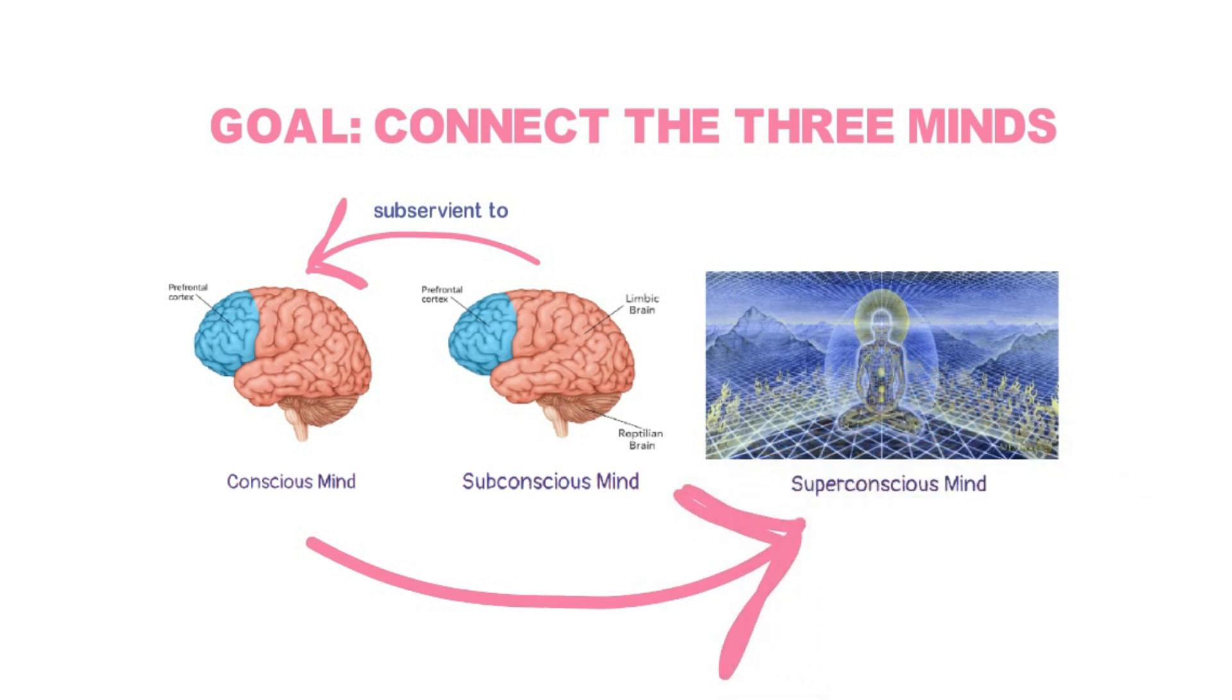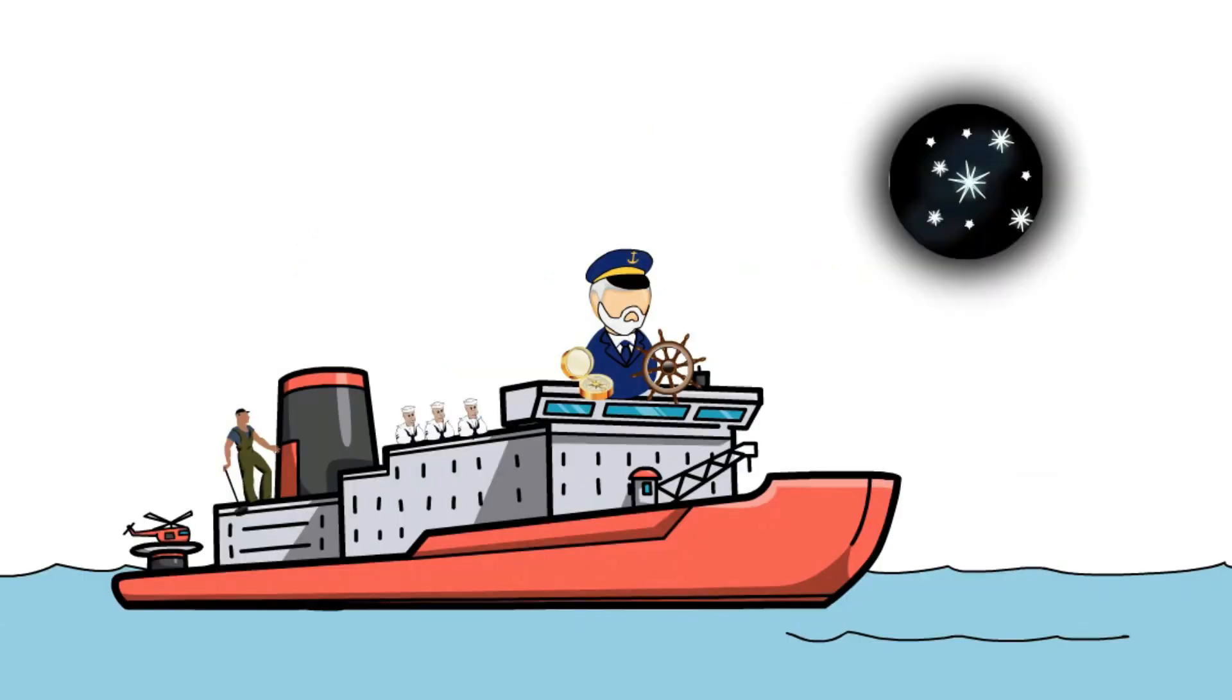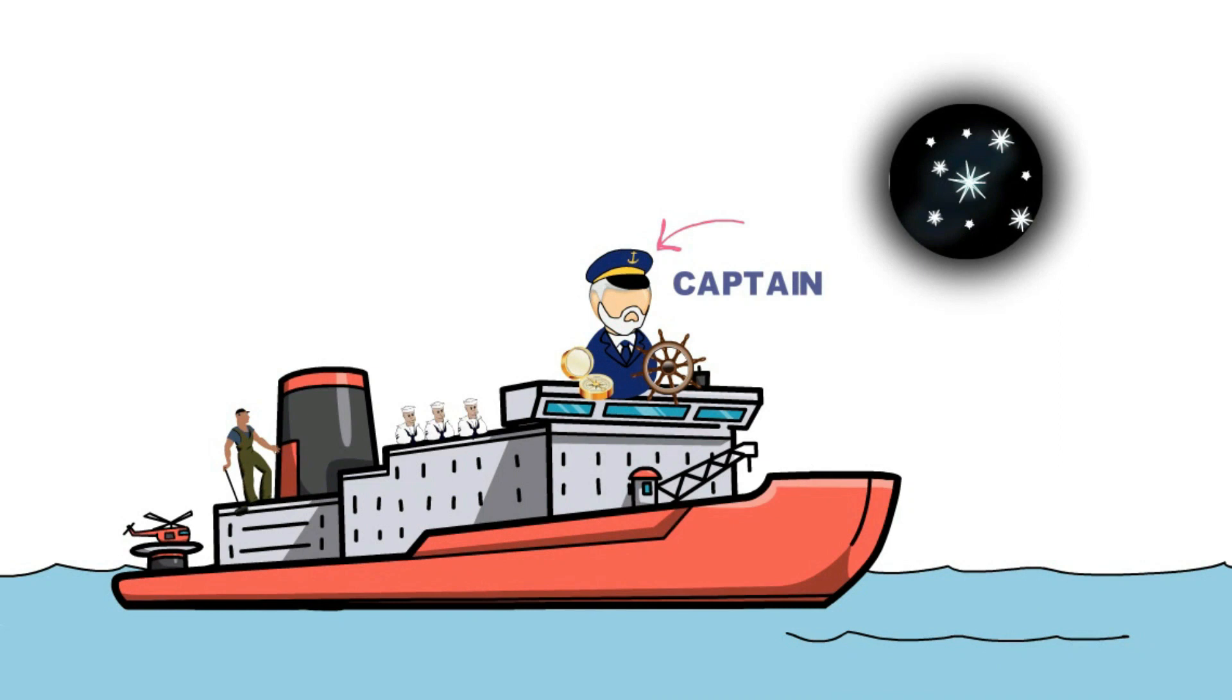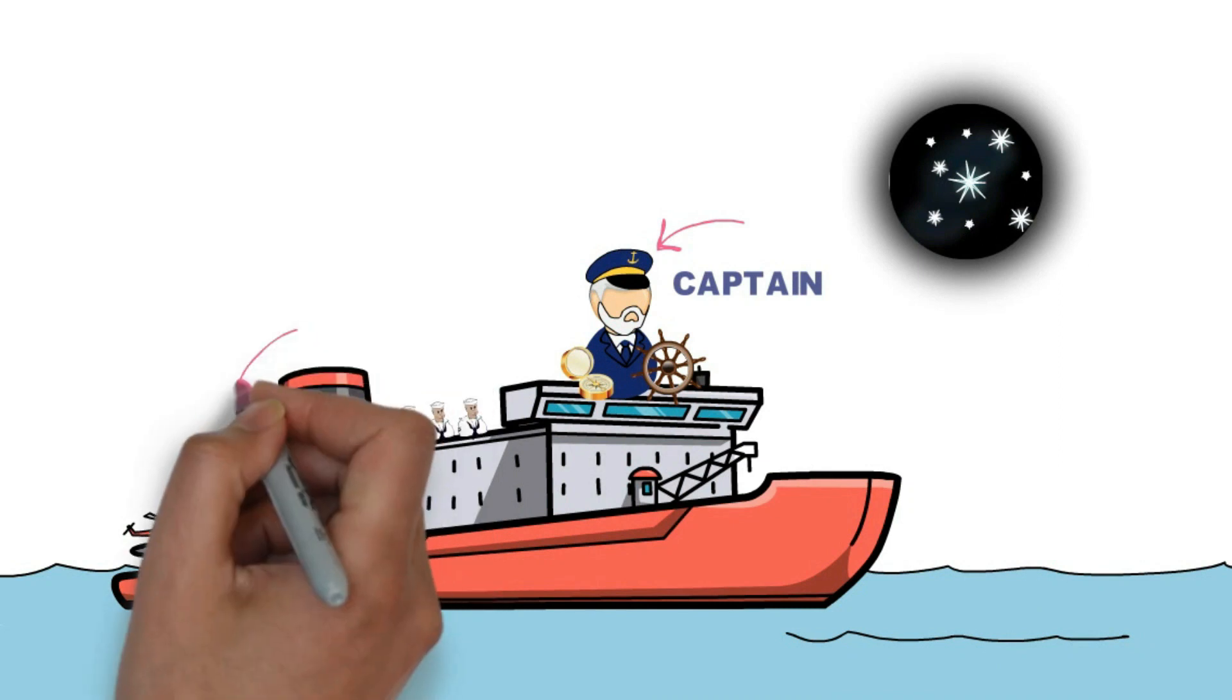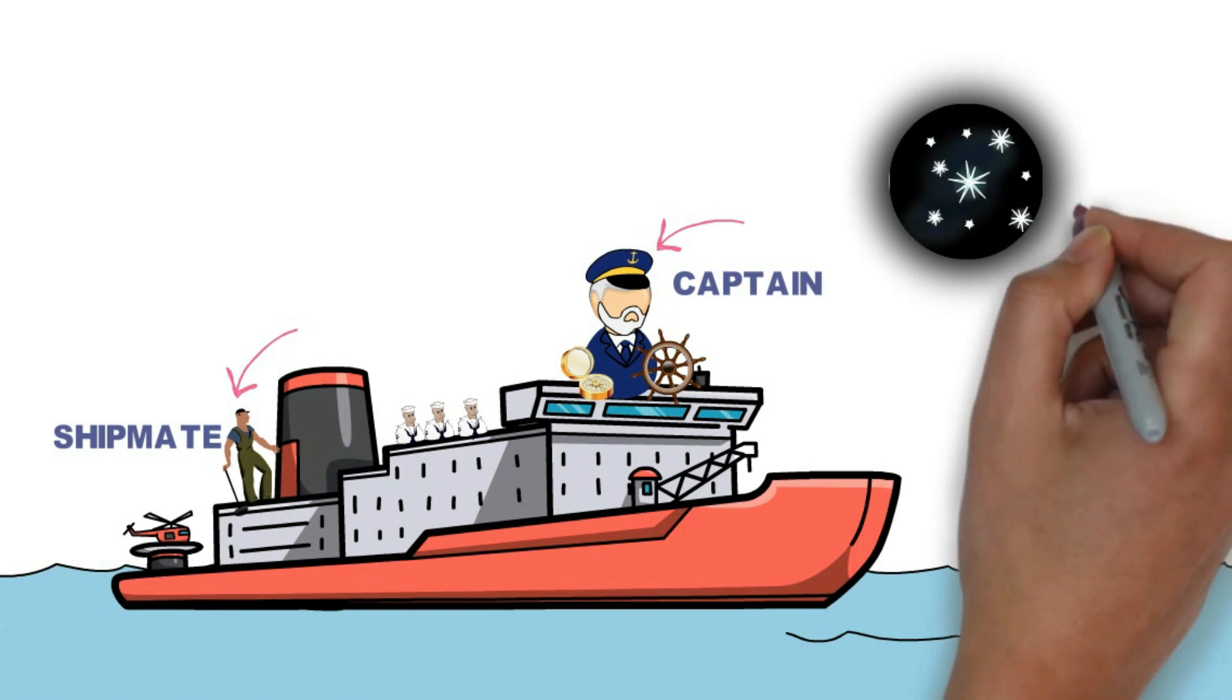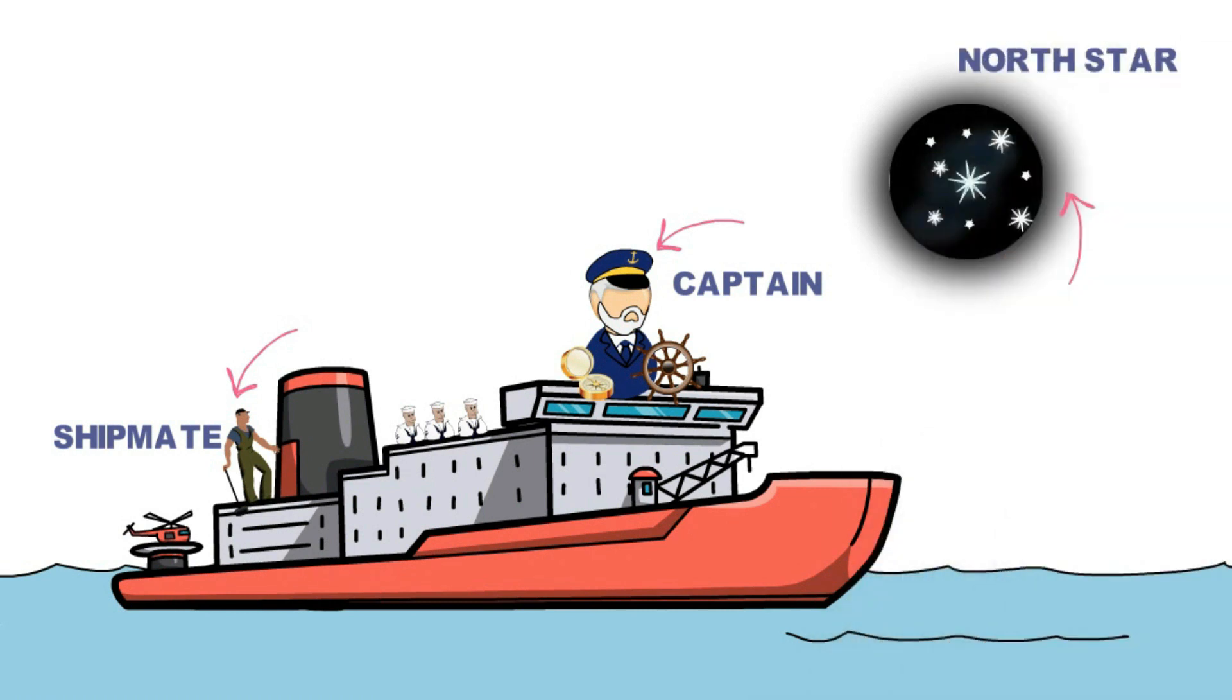A creative way to visualize these three minds is with this image. You can think of your conscious mind as the captain of the ship, your subconscious mind as the shipmate below the deck, your superconscious mind as the north star that is guiding you on your journey.